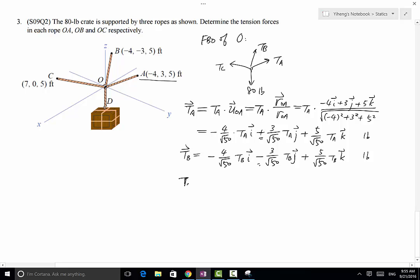And lastly, TC can be determined using the same method from position vector OC, and that is 7 over square root of 74 TC i plus 5 over square root of 74 TC k. There's no y component for TC, in pounds. And don't forget this force right here: W equals negative 80k pounds. So now all forces are represented in Cartesian vector forms.